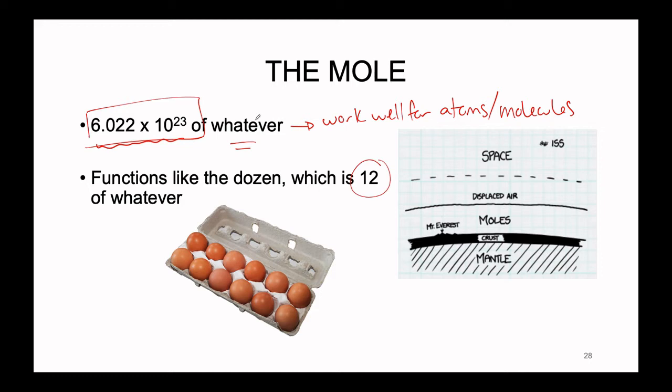So instead of 12, we have 6.022 times 10 to the 23. It's for whatever it is that we're working with. Just like with the dozen, we could have a dozen eggs, a dozen donuts, a dozen of whatever. The mole is just a larger quantity. Let's say we have a mole of something we actually know — a mole of moles, the furry little creature, about the size of your fist.